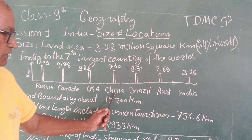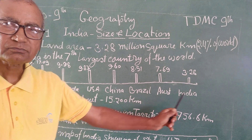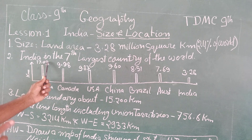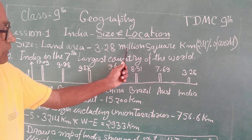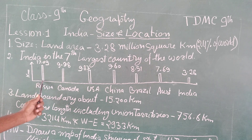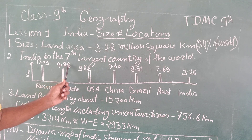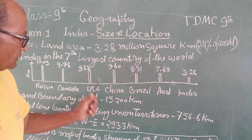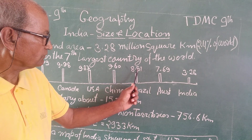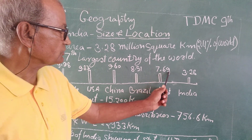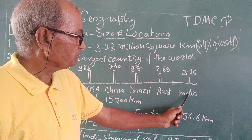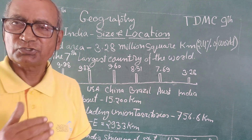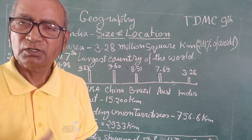The countries shown are Russia, Canada, USA, China, Brazil, Australia, and India. Russia has a total area of 17.09 million square kilometers — it is the largest country in the world. Canada is second. China is 9.98 million square kilometers, USA is 9.83, China 9.60, Brazil 8.51, Australia 7.69 million square kilometers, and India 3.28 million square kilometers. Thus, India is on the 7th position in land area of the world.